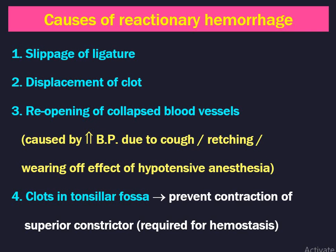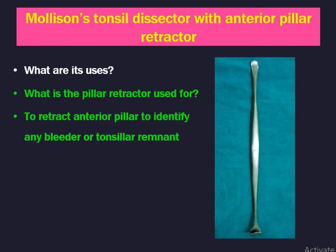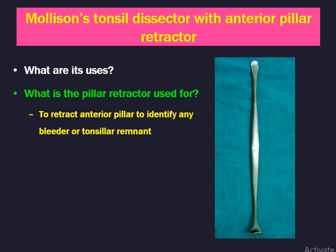Fourth cause is clots in the tonsillar fossa, which prevent contraction of the superior constrictor muscle required for haemostasis to stop bleeding. Next instrument is Mollison's tonsil dissector with anterior pillar retractor — also one of the important instruments asked in final exams. Its uses are to dissect the tonsil by the tonsil dissector and to retract the anterior pillar to identify any bleeder or tonsillar remnant after surgery by the anterior pillar retractor.